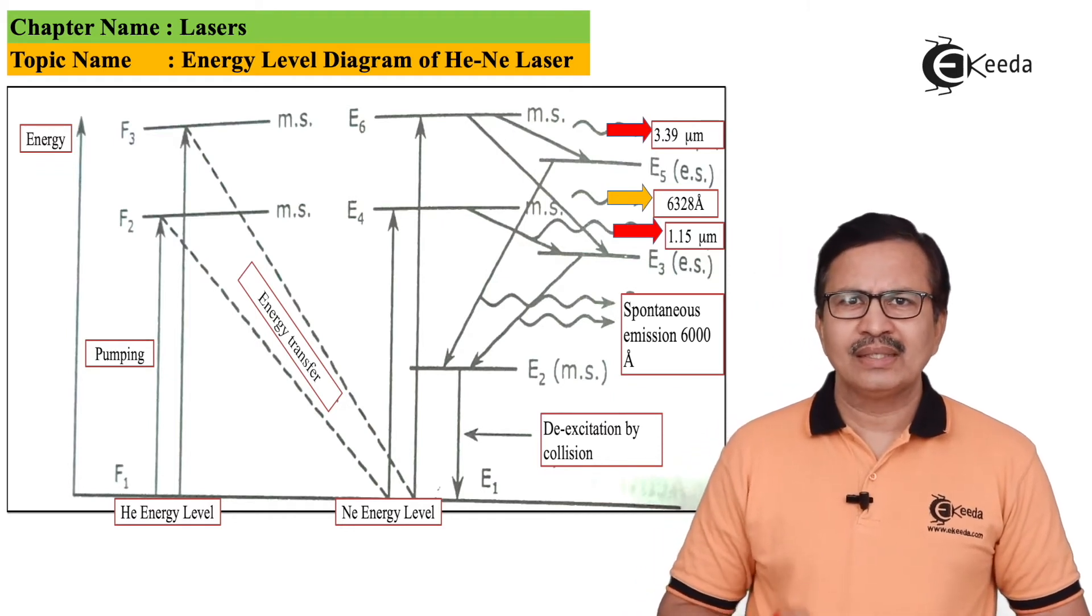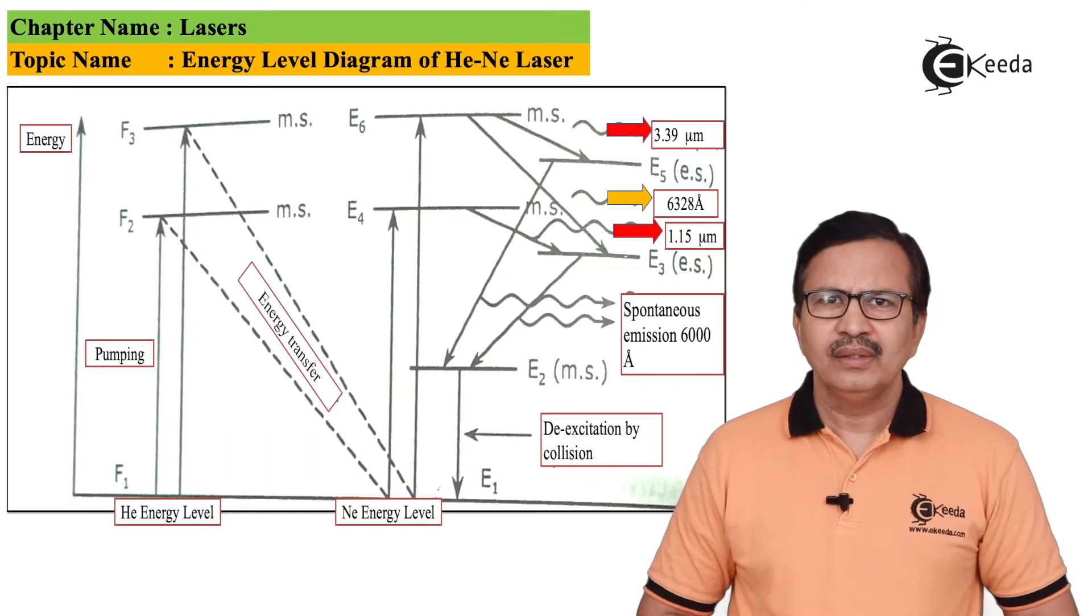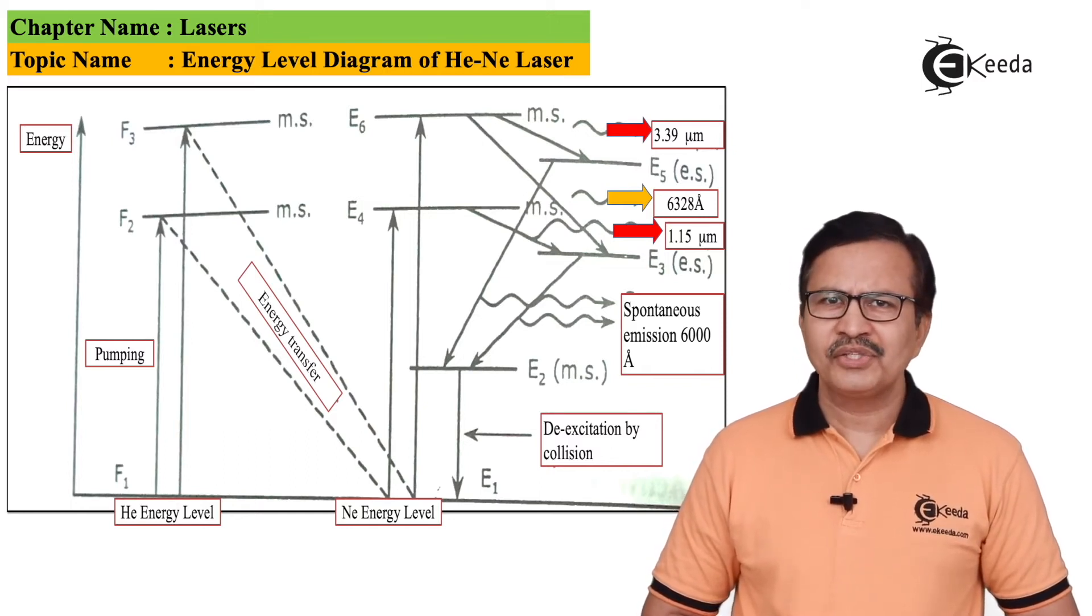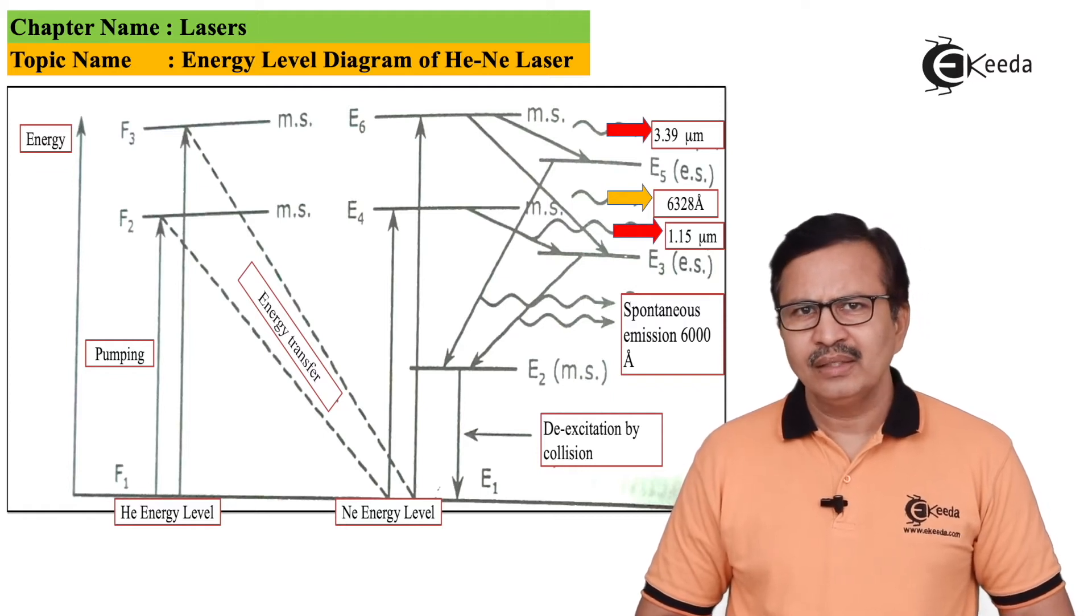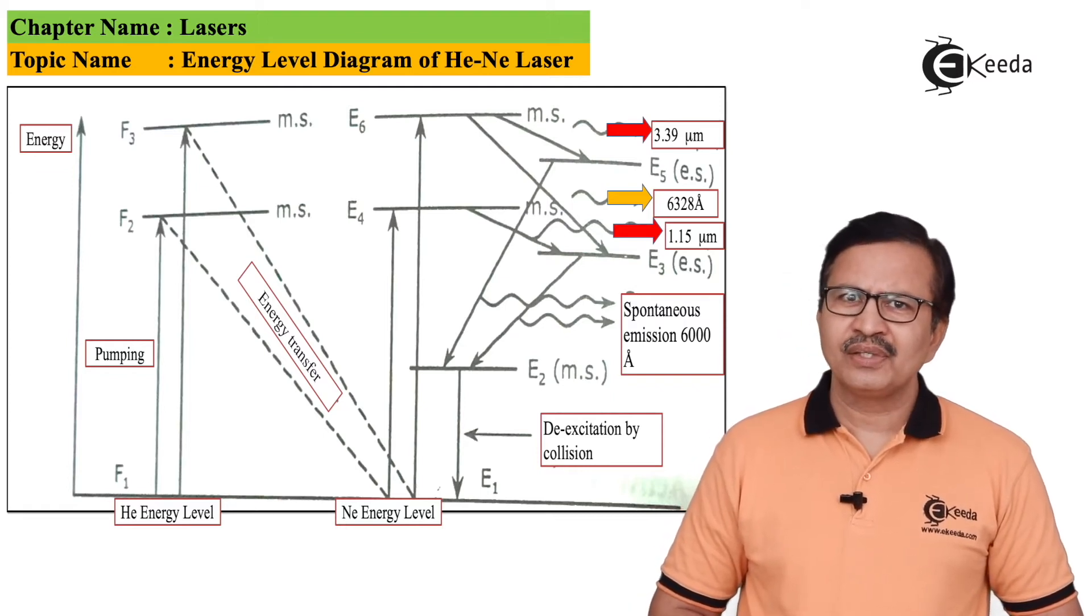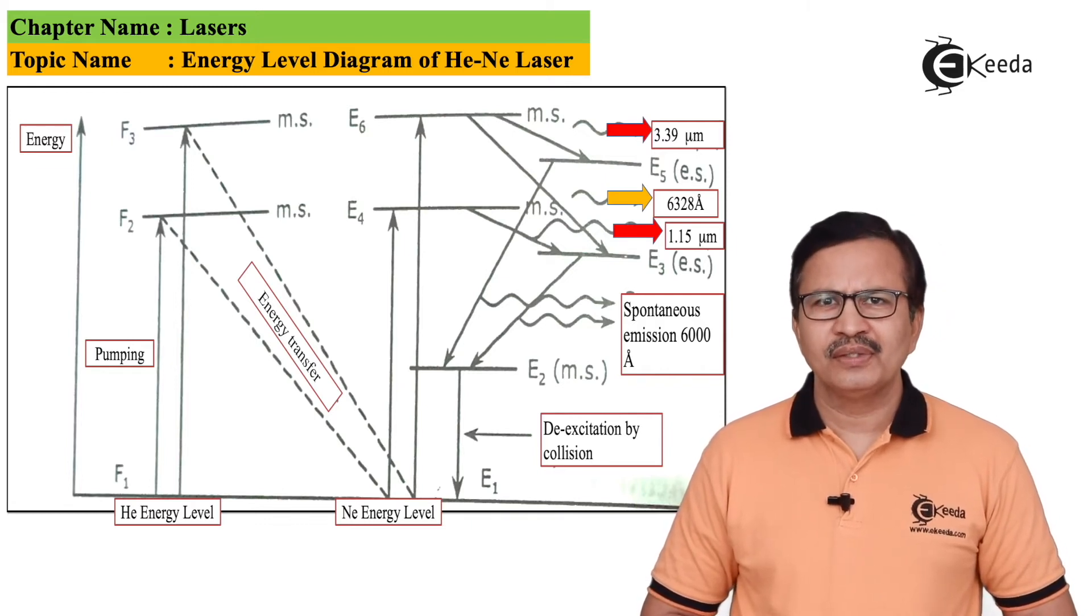Additionally, there is a transition from E6 to energy level E3. This transition falls in the visible region and has a value of 6328 angstroms.